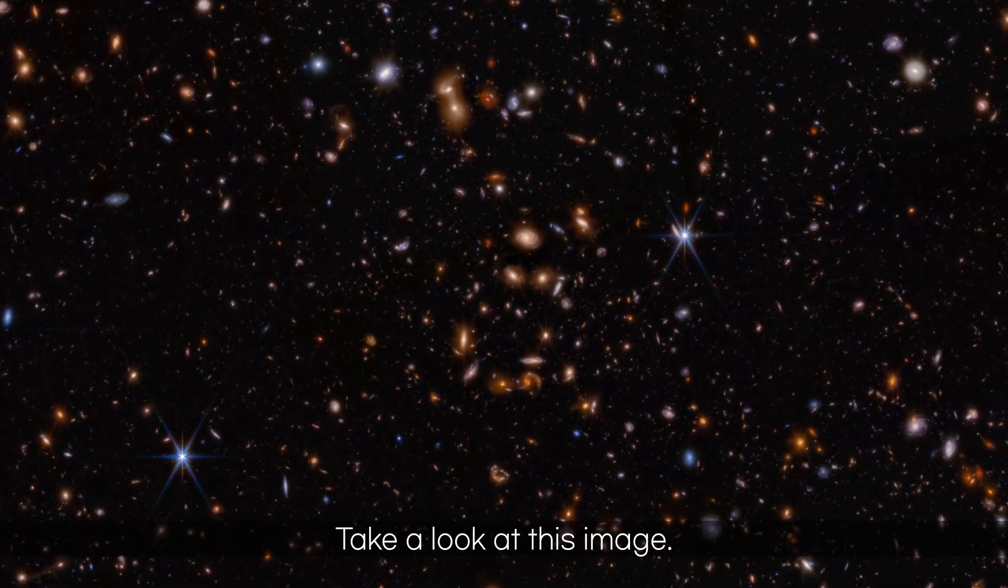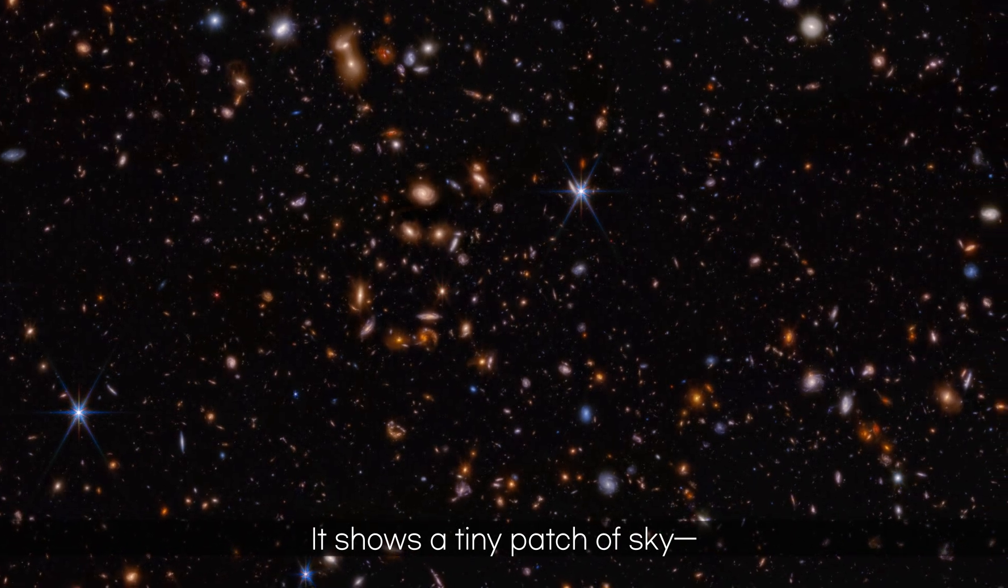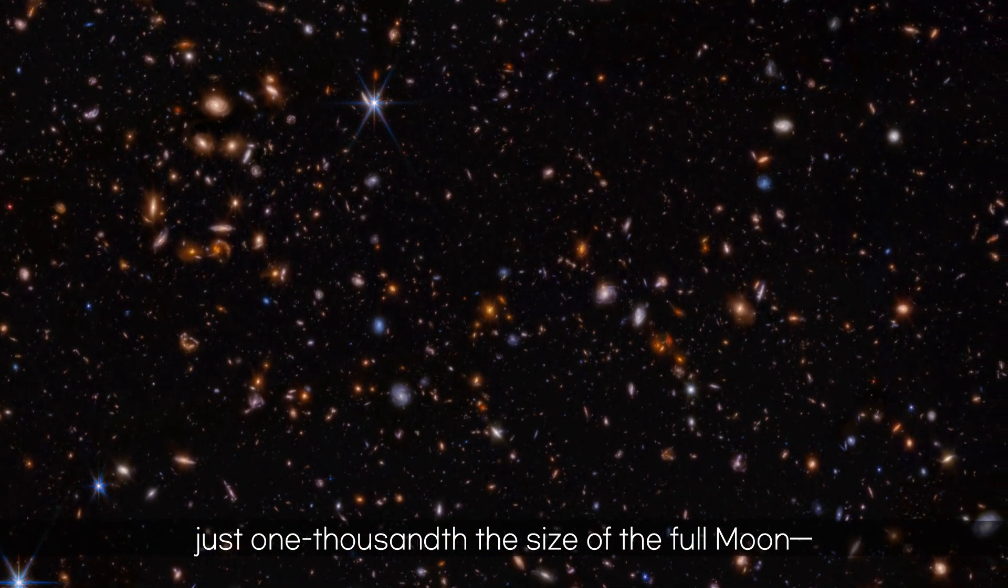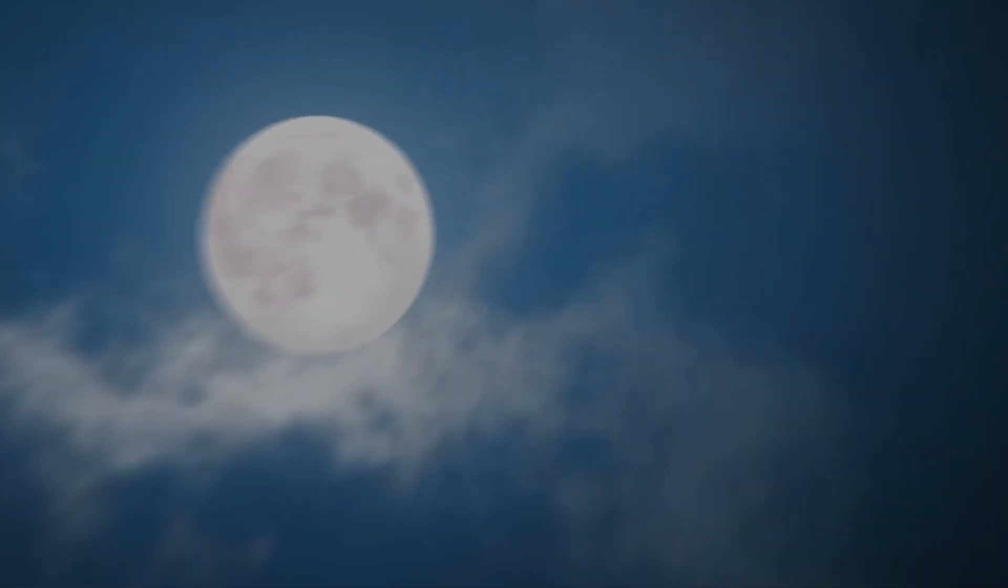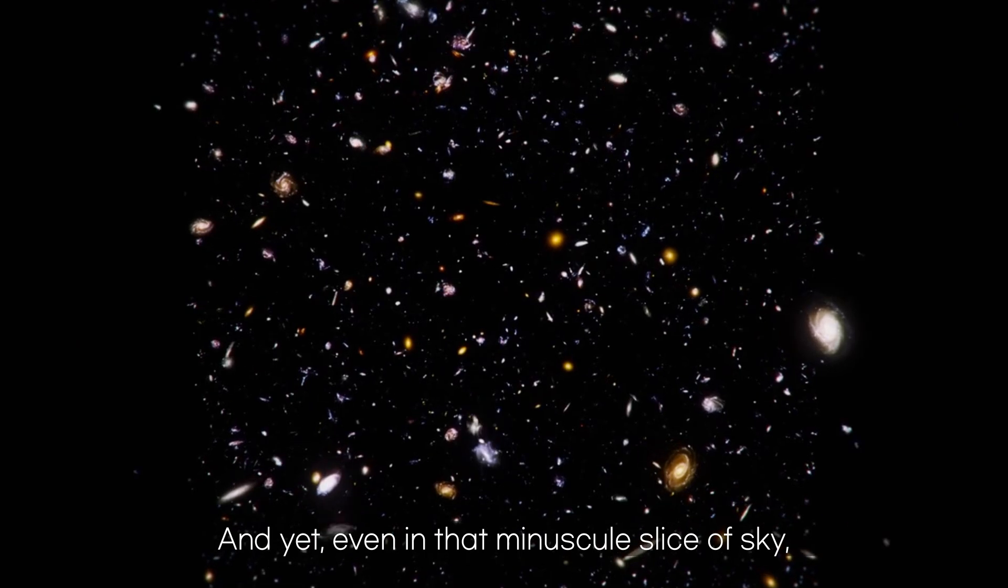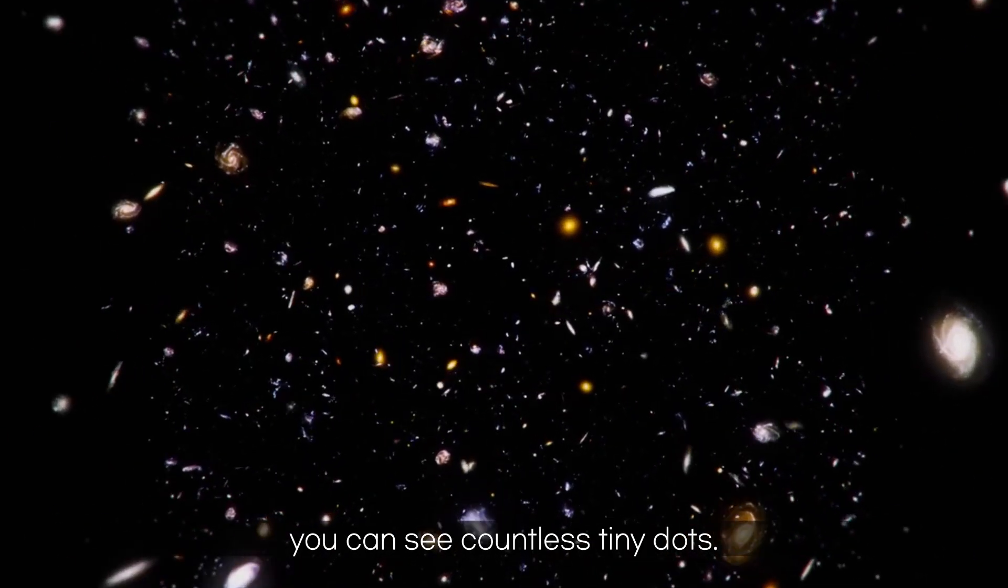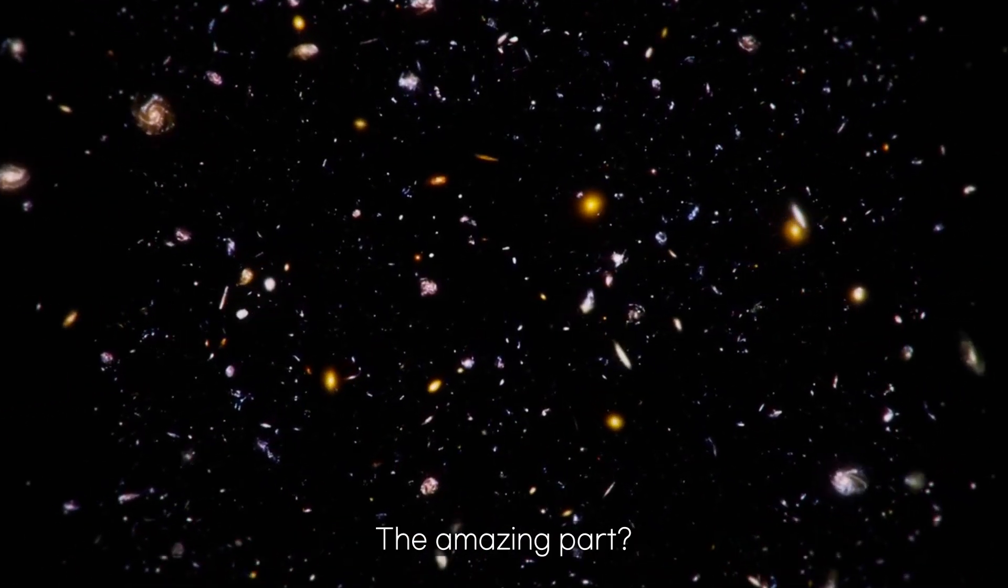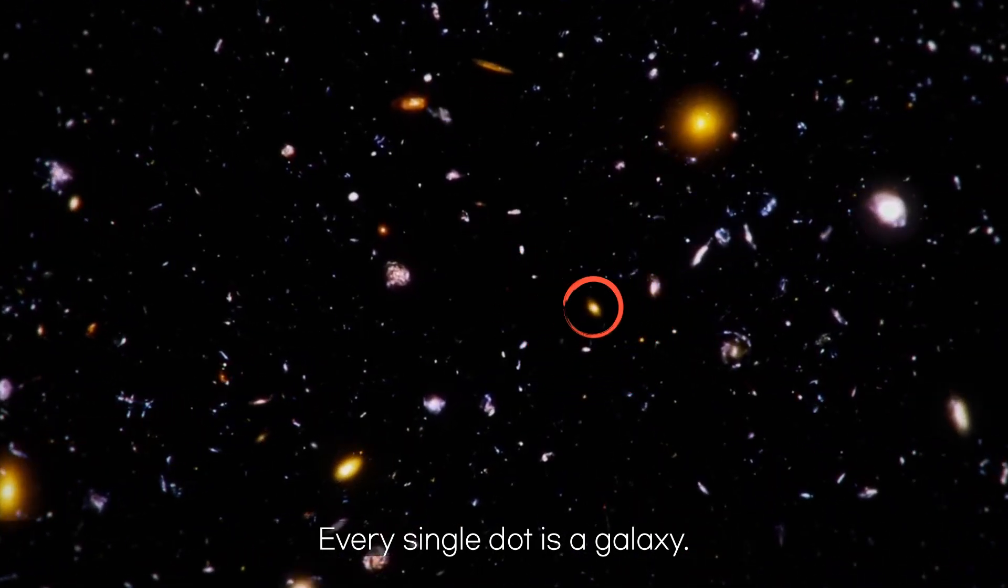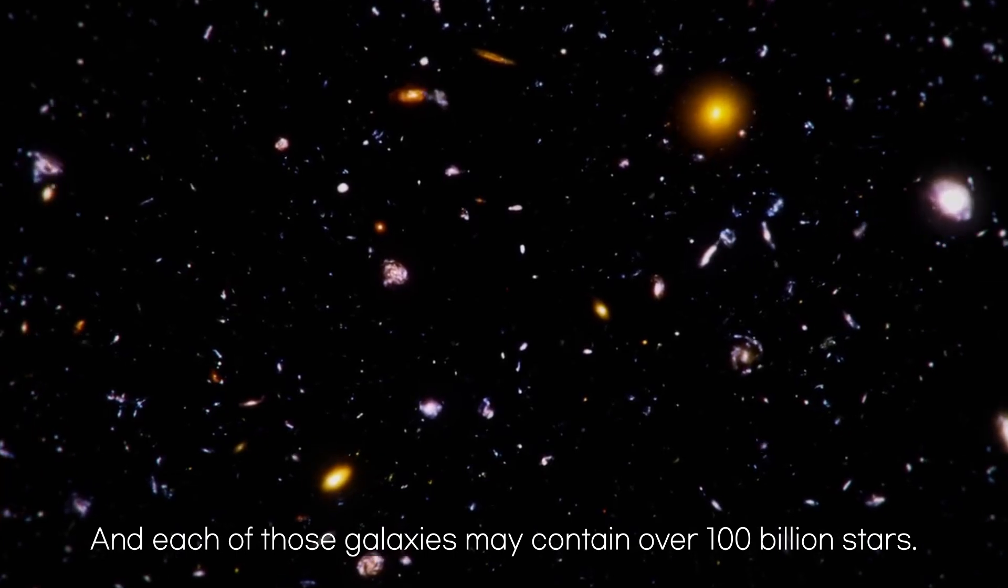Take a look at this image. It shows a tiny patch of sky, just one thousandth the size of the full moon, captured by a powerful space telescope. And yet, even in that minuscule slice of sky, you can see countless tiny dots. The amazing part? Every single dot is a galaxy. And each of those galaxies may contain over 100 billion stars.